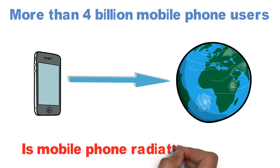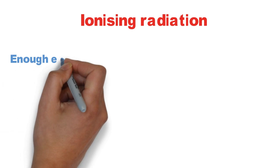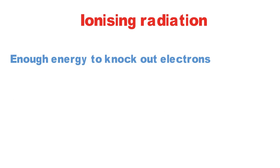But is mobile phone radiation harmful to living beings? To answer this, we need to understand what are ionizing and non-ionizing radiations. If a radiation carries enough energy to knock out electrons from atoms or molecules, then such a radiation is an ionizing radiation.